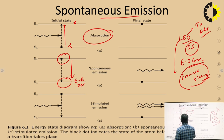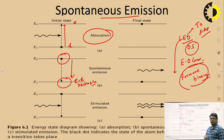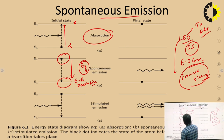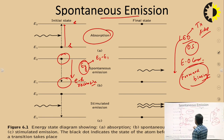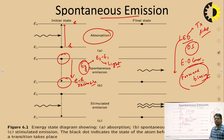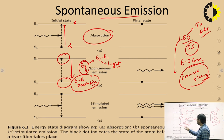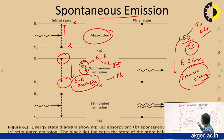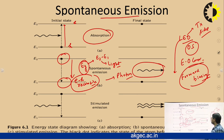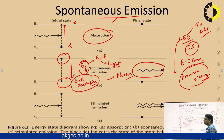This electron in the higher state is unstable, and after some time it will come down in a random manner. Whenever it comes down, there will be recombination of the electron and hole pair. By this recombination, energy equal to the band gap — that is E2 minus E1, from higher state to lower state — is released. In the case of LED, this is released in the form of light, or we can say photons are generated. This principle is termed as spontaneous emission.